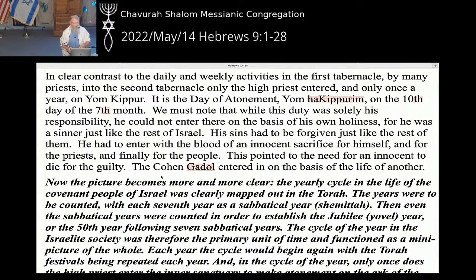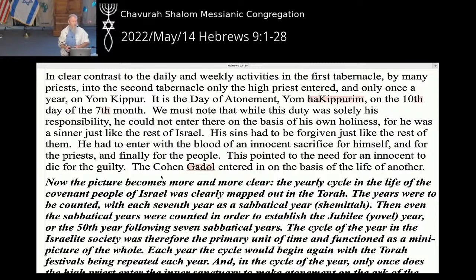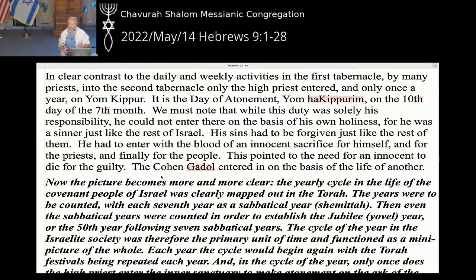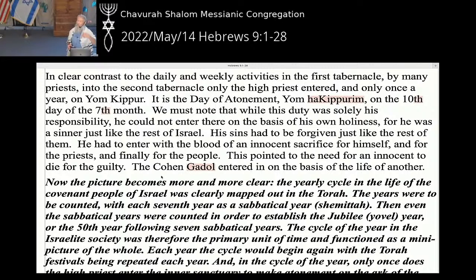Only the high priest entered, only once a year on Yom Kippur — the Day of Atonement, Yom HaKippurim, the tenth day of the seventh month. We must know that while this duty was solely his responsibility, no one else could do it — only the high priest. He could not enter there on the basis of his own holiness, for he was just like the rest of them — he was sinful. He had to be forgiven just like the rest of them; he had to offer his sacrifice just like the rest of them. So he took the blood of a bull to make sacrifice for himself and for all the priests.